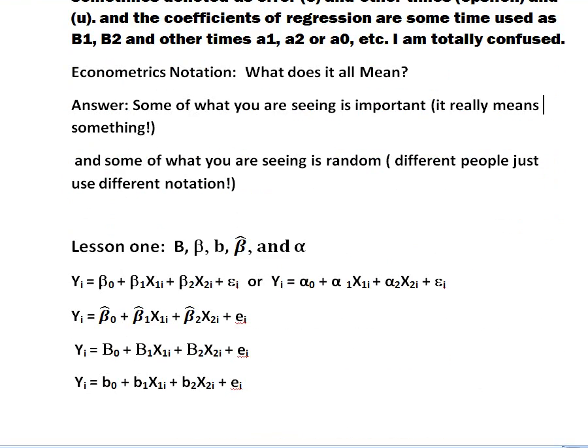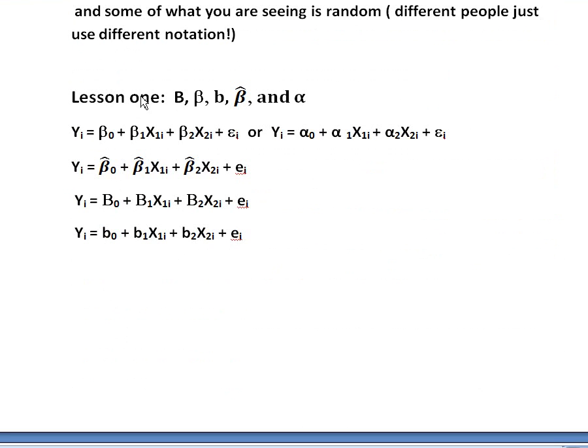Let me give you some more specific examples. Lesson one: whenever you're looking at the equation of a line or relationship you're modeling, a lot of times the slope coefficients that you see, sometimes you'll see b, sometimes you'll see beta, sometimes you'll see lowercase b, sometimes you'll see a beta hat, and sometimes you'll see alphas. What's going on here?